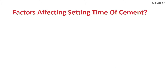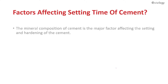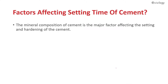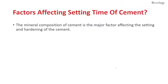Next, we'll discuss what are the factors affecting setting time of cement. The mineral composition of cement is the major factor affecting the setting and hardening of cement, as these are the main compositions involved in the manufacturing process and are very important constituents for the hardening and setting time of cement.